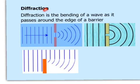Diffraction. Diffraction is the bending of a wave as it passes around the edge of a barrier, or the spreading of a wave around the edge.